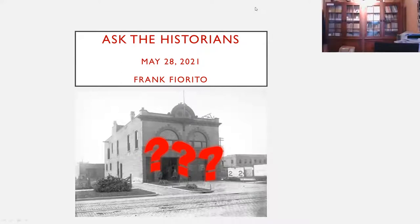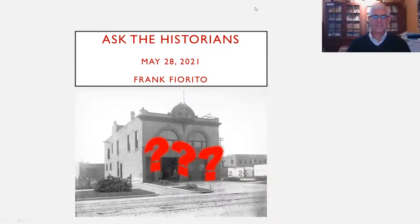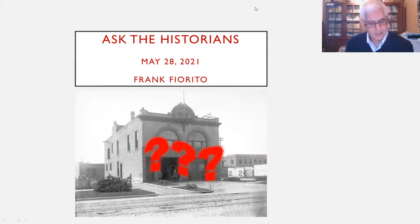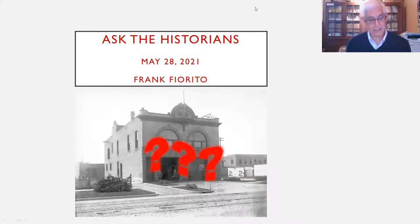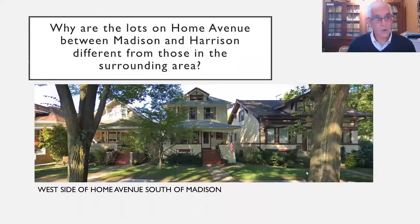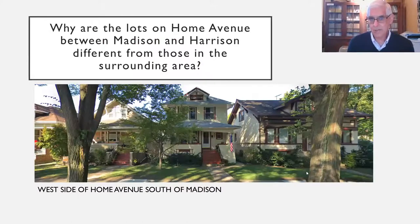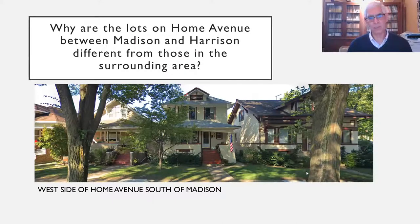Good morning, everyone. I'm Frank Fiorito, and I'm looking forward to sharing the research that I did on today's Ask the Historian question: why are the lots on Holm Avenue between Madison Street and Harrison different from those in the surrounding area? What you're seeing right now is a picture of the west side of Holm Avenue, and we'll be contrasting that with the east side of Holm Avenue.